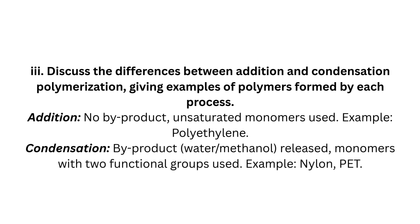Long answer Question 3: Discuss the differences between addition and condensation polymerization, giving examples of polymers formed by each process. Addition: no byproduct, unsaturated monomers used. Example: polyethylene. Condensation: byproduct water/methanol released, monomers with two functional groups used. Examples: nylon, PET.